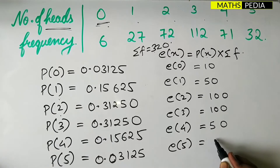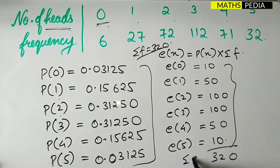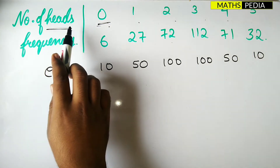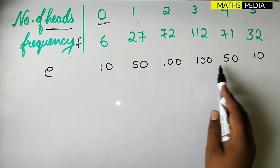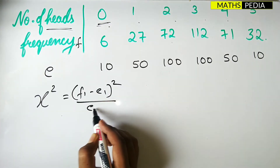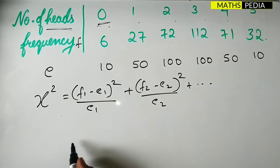Now we need to verify that summation of E equals summation of F. When you add all the expected frequencies, you get 320, which confirms summation of E equals summation of F. Therefore we can proceed to find the chi-square magnitude, given by: chi-square = sum of (fi - ei)^2 / ei for each pair.